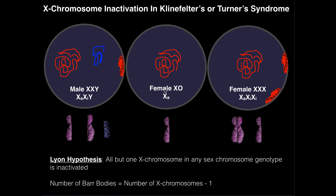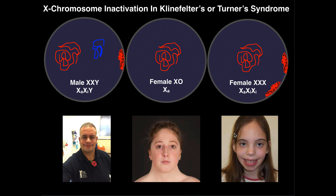In Triple X syndrome, because there are three X chromosomes, we only need one active X, and the other two are inactivated — so we actually see two Barr bodies. There are some slight abnormalities in appearance, though in some cases there may not be. These people can go on to live normal, fulfilling lives. There may in some cases be some learning or cognitive deficits — I've read that in Turner syndrome in particular, IQ scores may be on the order of 10 to 20 points lower than average, but nothing to make them completely ineducable.